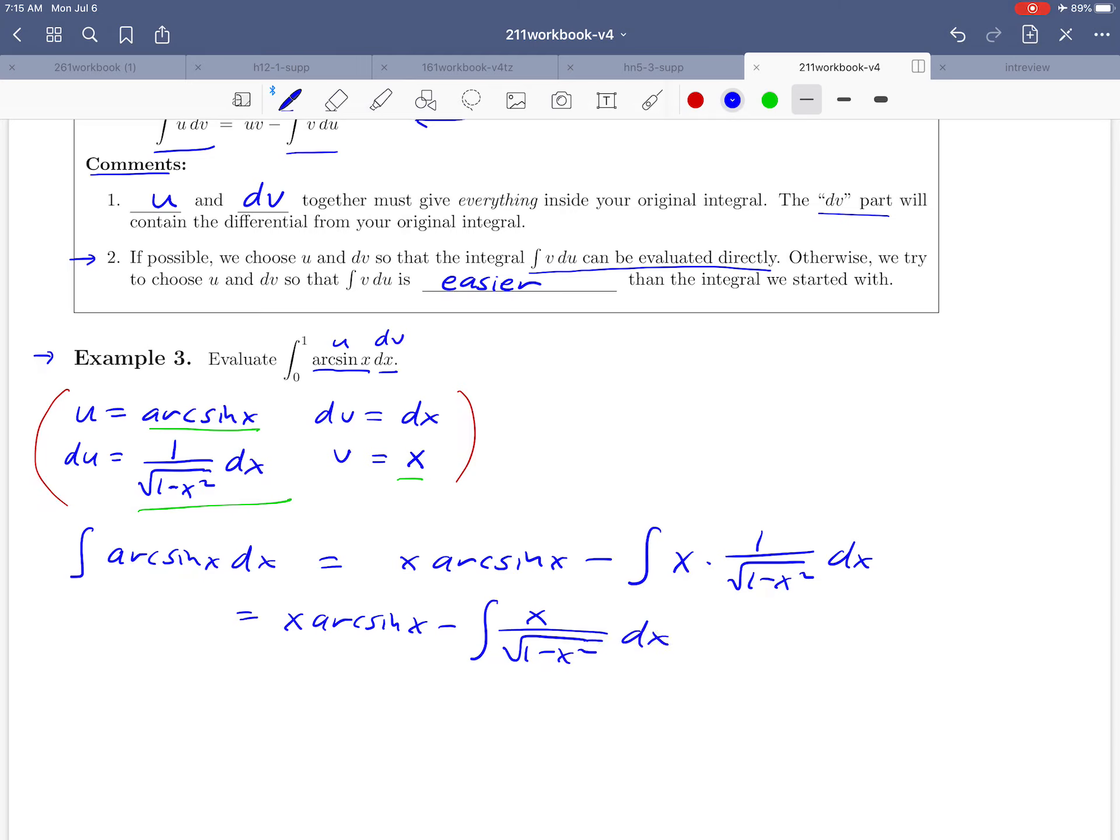Now what's a little bit unusual about this is you might look at this and say we just said above that we'd like the integral that we come up with to be easier. You might look at this integral and say that doesn't look very easy, x over the square root of 1 minus x squared. But even though it's not the easiest integral in the world, it is an integral that we can do. We just need to use a substitution to do it, a u substitution.